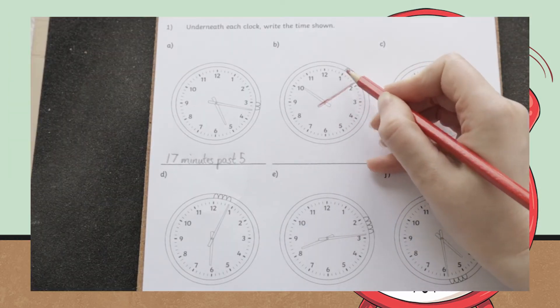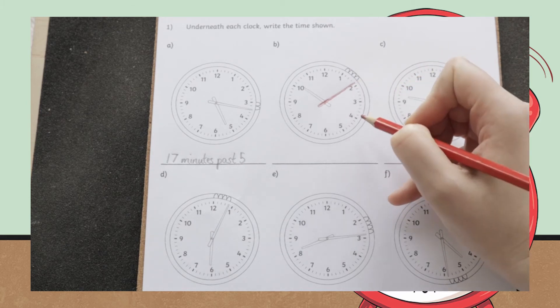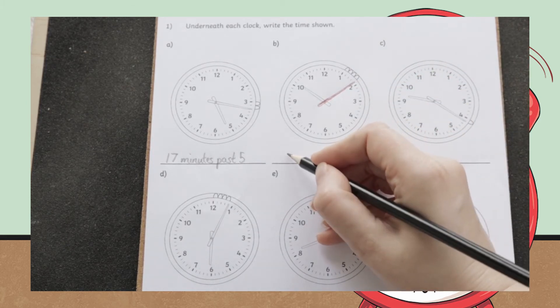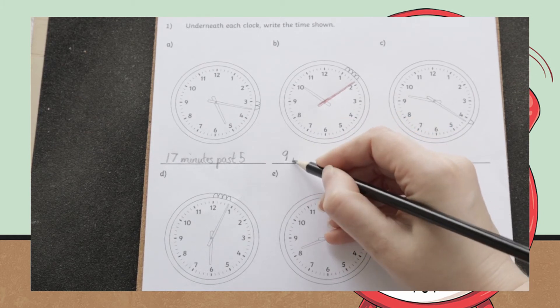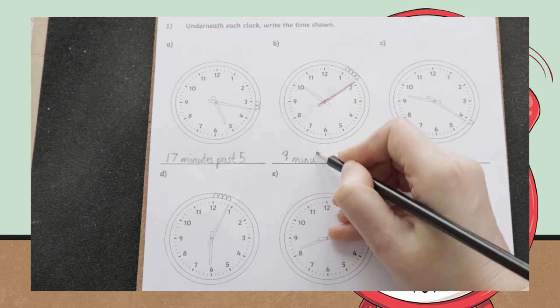If children are struggling with this, why not use some colouring pencils to help identify the clock hands that measure both the minutes and hours as well as identify which side of the clock that they are reading.